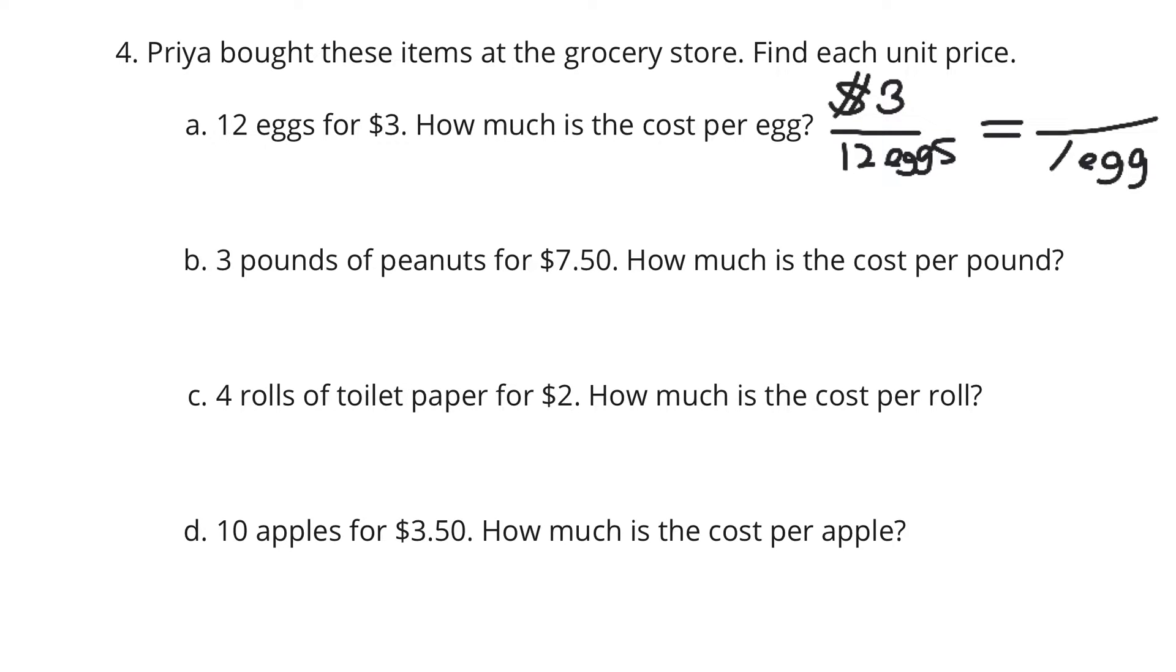And so attention to detail here matters. We're dividing this by 12. So if you're getting an answer of 4 here, you're doing 12 divided by 3, not 3 divided by 12, which is what we need to do in order to get a solution of $0.25 per egg.